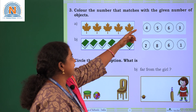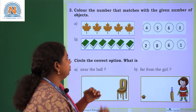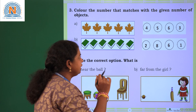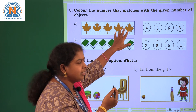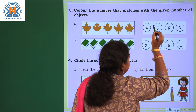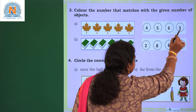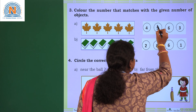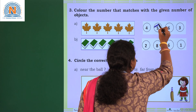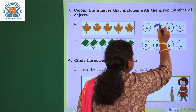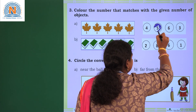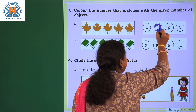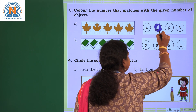Color the number that matches with the given number of objects. There are some leaves. You have to count the number of leaves in the picture. 1, 2, 3, 4, 5. How many leaves are there? 5 leaves. In which circle you are having 5? The options are 4, 5, 6, 3. Color the number that matches — there are 5 leaves so you need to color 5. You can pick your favorite color, but you have to color the correct number. Count the objects and then color that particular number.